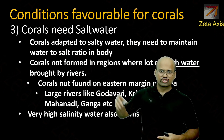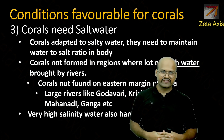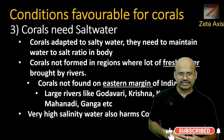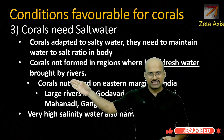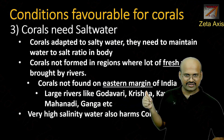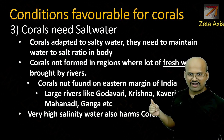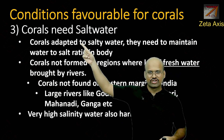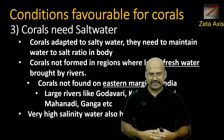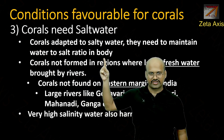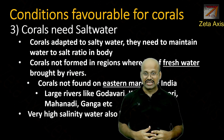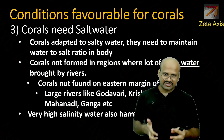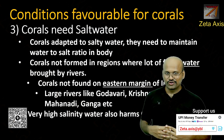The third condition is that corals need salt water. Corals are marine organisms adapted to salty water and require it to maintain their water-to-salt balance. Therefore corals are not found in regions where large amounts of fresh water are brought by rivers. For example, corals are not found on the eastern margin of India because large rivers like the Godavari, Krishna, and Kaveri bring large amounts of fresh water into the Bay of Bengal.